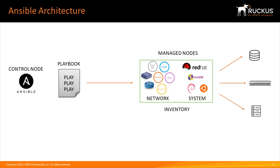All four of these pieces tie back into how Ansible works. Ansible essentially works by connecting your nodes via SSH and pushing out small programs called Ansible modules, which are then executed on the managed nodes. These module libraries are developed by our engineering team in-house and are supported from 8.0.90 onwards.